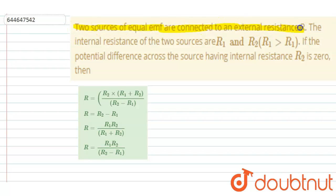The internal resistance of the two sources are R1 and R2. If the potential difference across the source having internal resistance R2 is zero, then you have to check out of the options which option is the correct one.